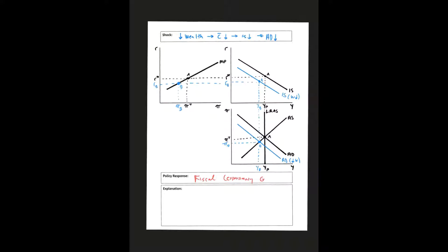So either G is increasing or T is decreasing. And remember, an increase in government purchases or a decrease in taxes, that's going to shift my IS curve.